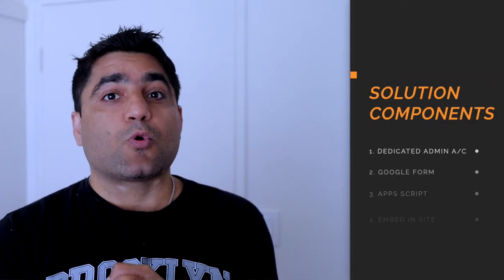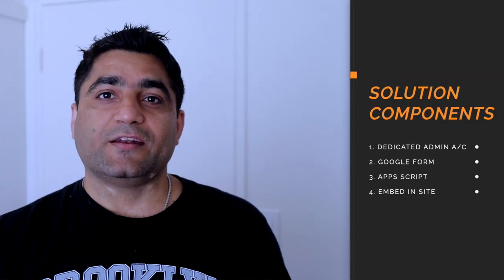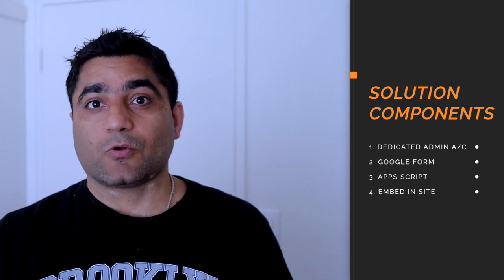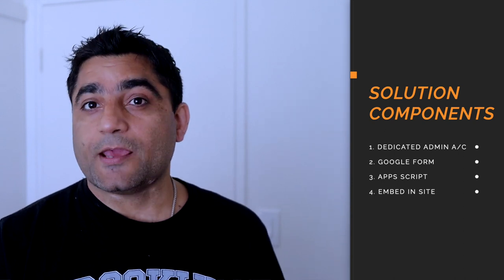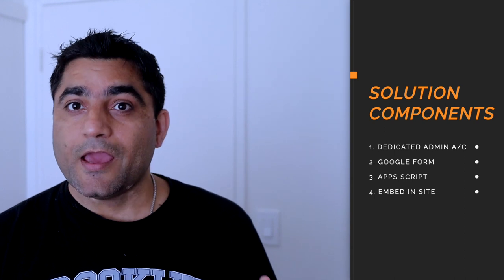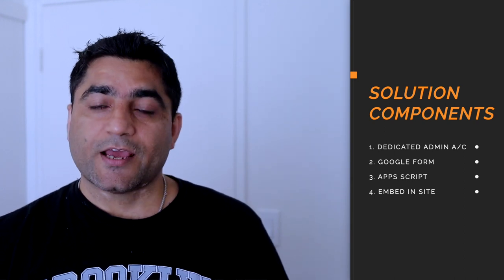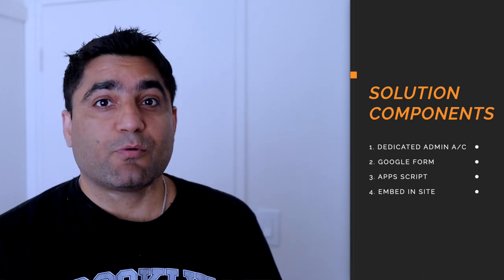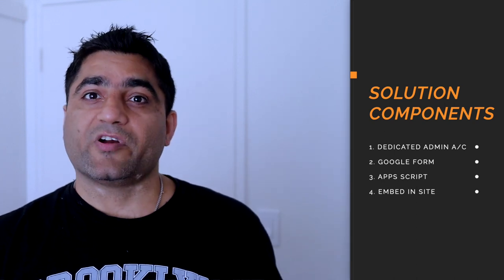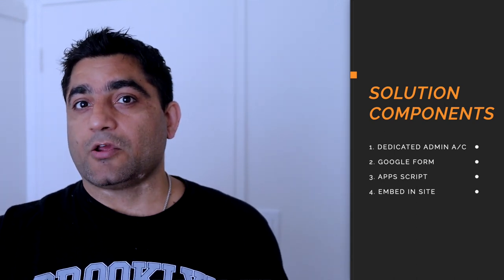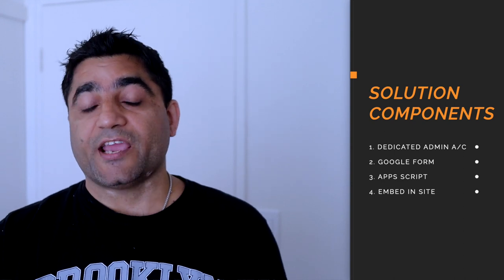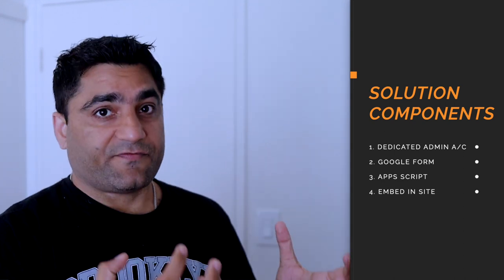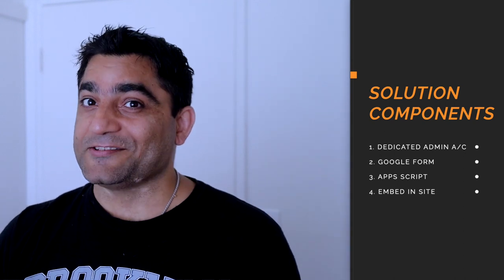Step number one: we will create a dedicated Google admin account, which we will use to call Google Reports API and get the API data, and also to send emails to our requesters. Step number two: we will create a Google form where users will come and fill up the information — giving us input which we will use to provide their specific Google Meet meeting attendance report.